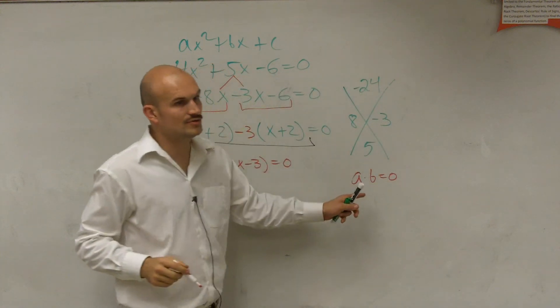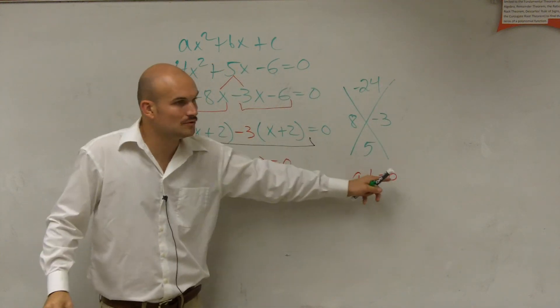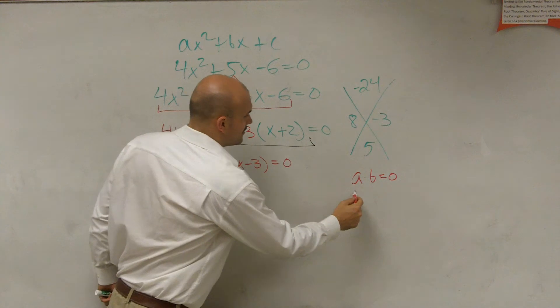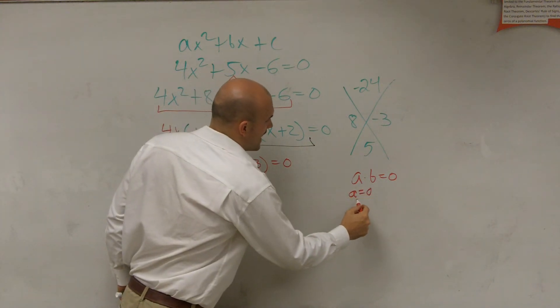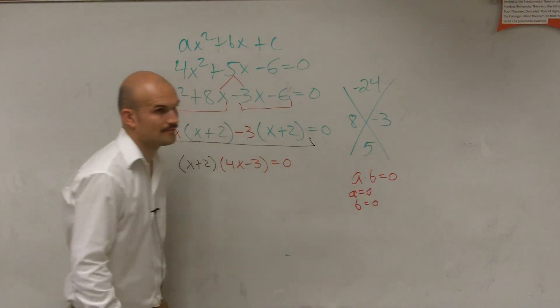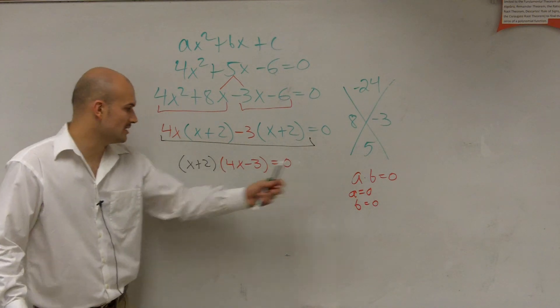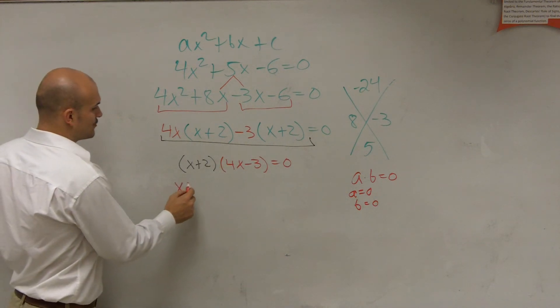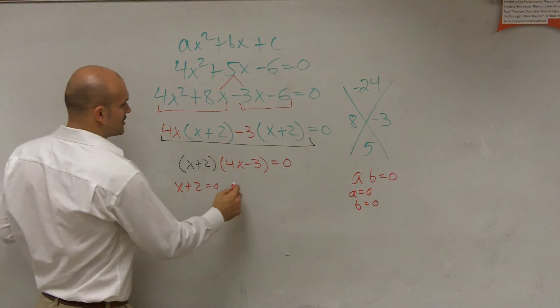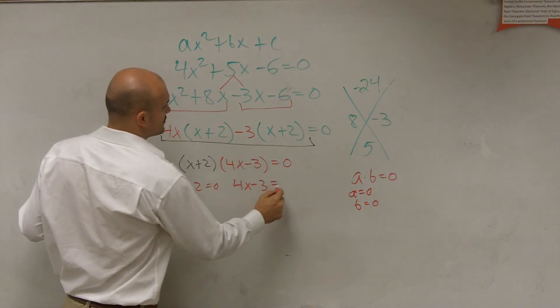Because when you have a product that equals 0, you can apply the zero product property, which states, if you have any two numbers, factors, whatever, that equals 0, then one of them has to equal 0. So we say a equals 0 or b equals 0. So what that does is that allows us to write this as x plus 2 equals 0 and 4x minus 3 equals 0.